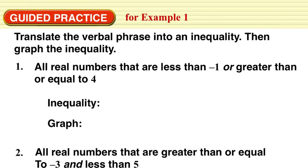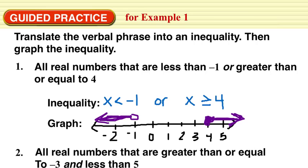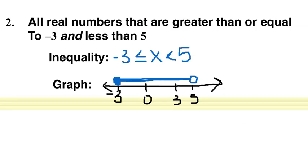For these two practice problems, pause the video, try to write the inequality and graph it on your own, then check the solution. x is less than negative 1, which means we have an open circle at negative 1 and our arrow goes to the left. Or, x could be greater than or equal to 4, which means we have a closed circle at 4 and our arrow goes to the right.